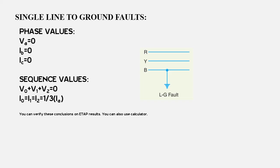First of all, let's discuss single line to ground fault. You can think of single line to ground fault as a scenario where, let's say, a tree falls onto the transmission line and as a result one of the lines falls to the ground. This will give rise to a faulty condition in the power system, and this fault is known as single line to ground fault.